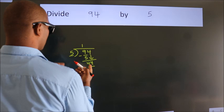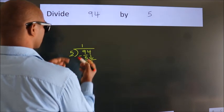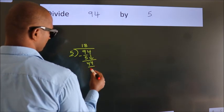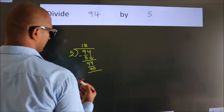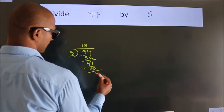A number close to 44 in 5 table is 5, 8, 40. Now, we subtract. We get 4.